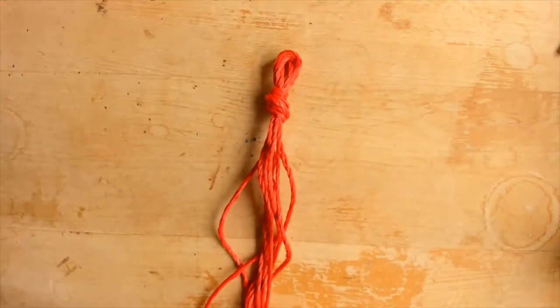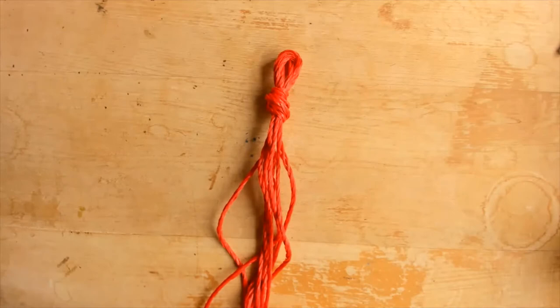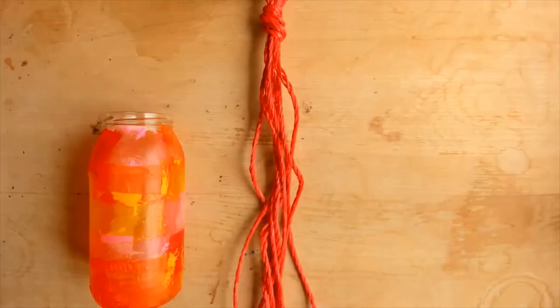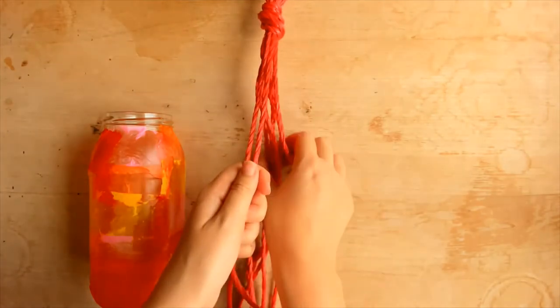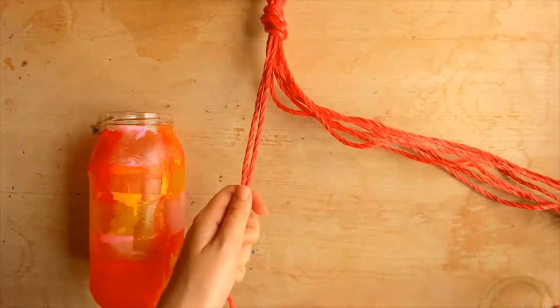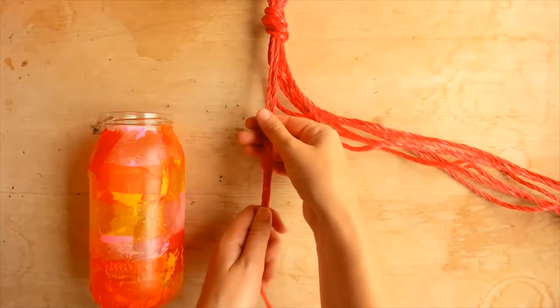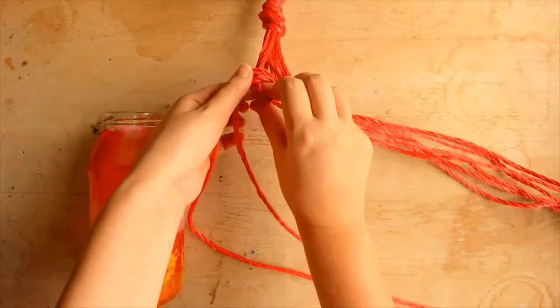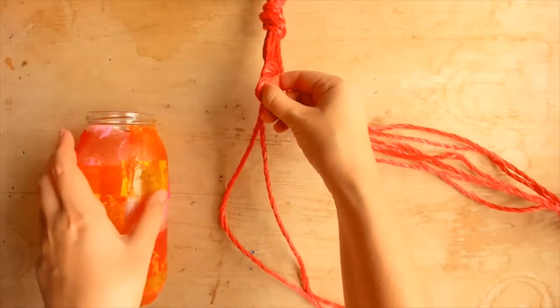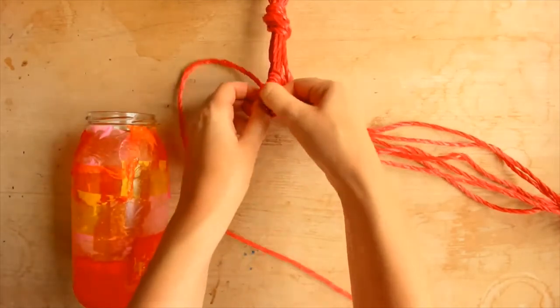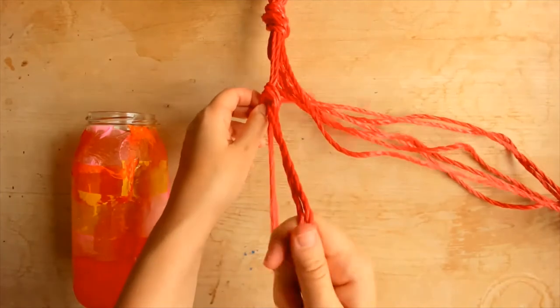The next steps are easier if you hang this knot up on a hook or on a doorknob so the strings hang down, or ask a friend to hold it up. I'm keeping mine flat so it is easier for you to see. Take two of the cords and use them to tie a knot, make the knot where you would like the top of the jar to be. Repeat this, tying knots in pairs of cords until you have four knots. Make sure each knot is the same distance from the top.